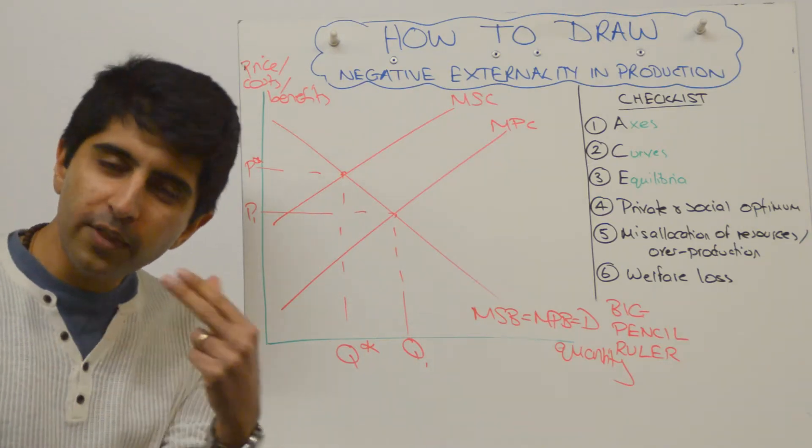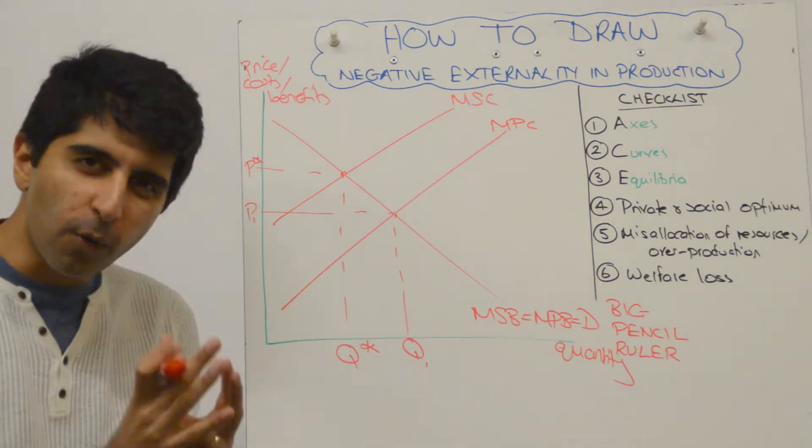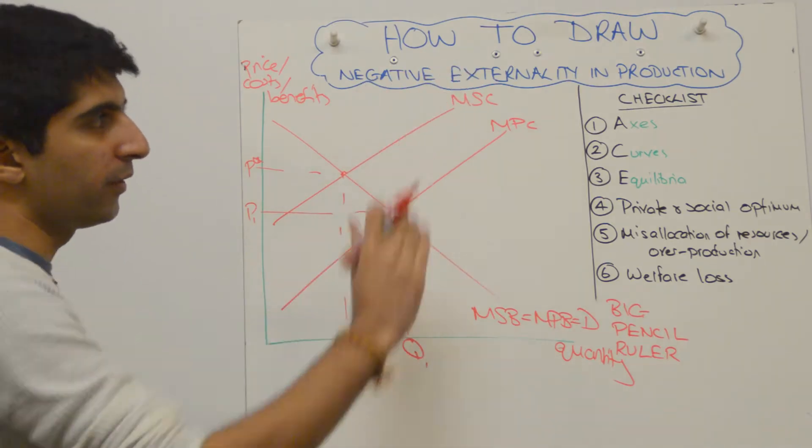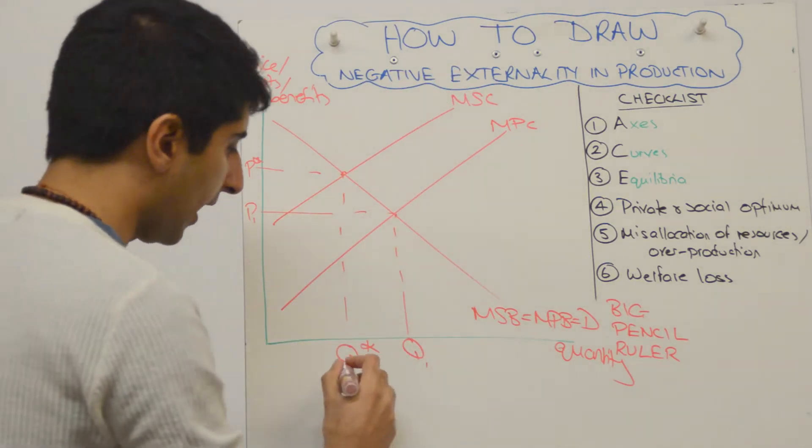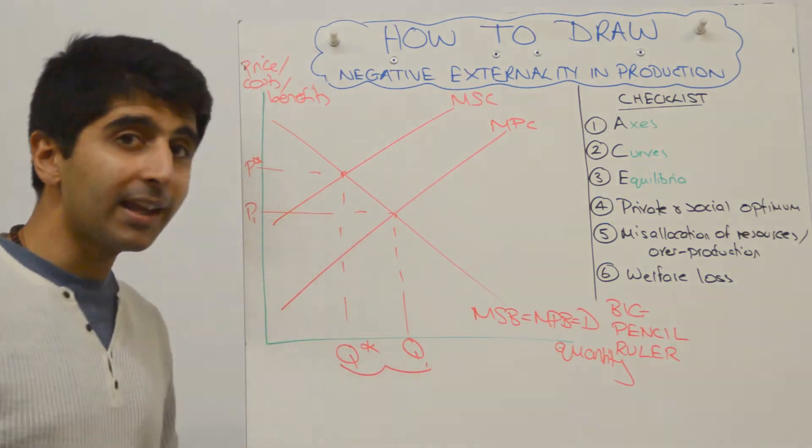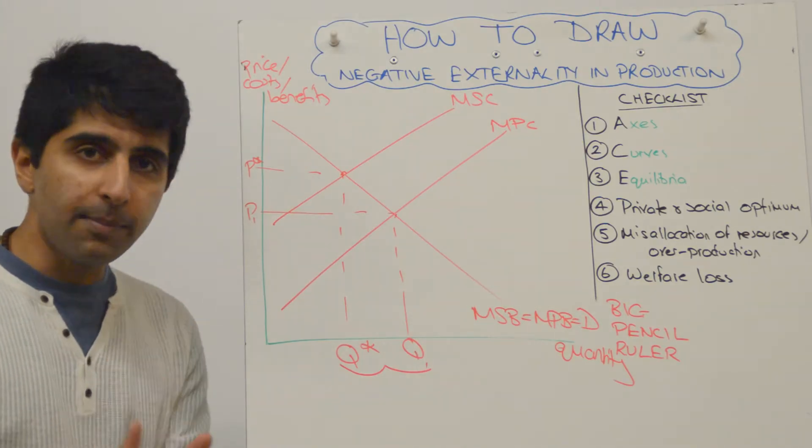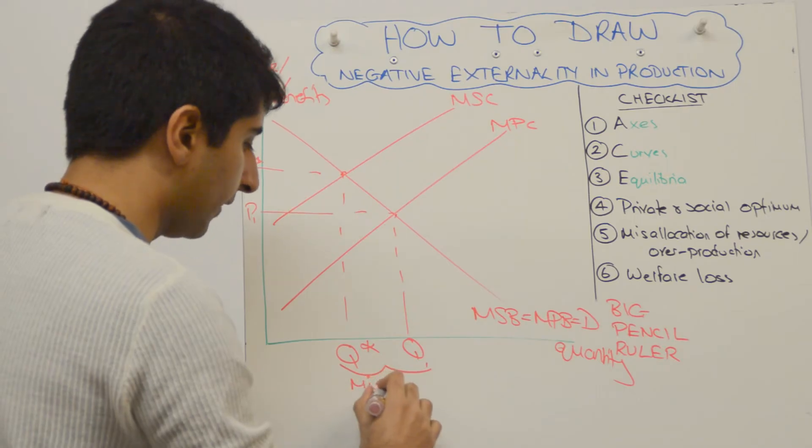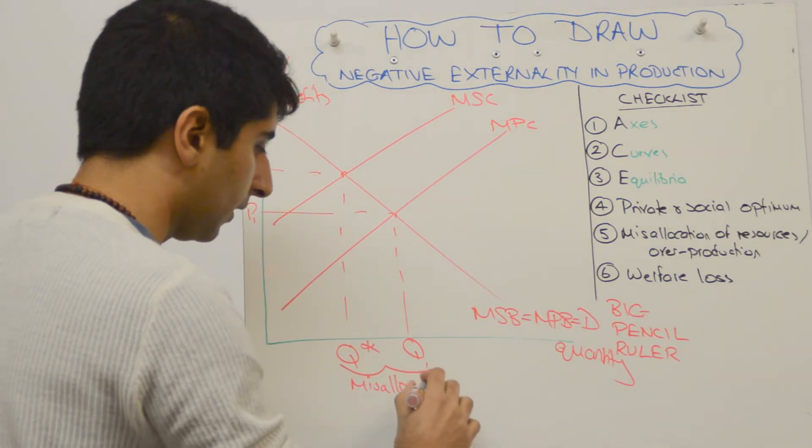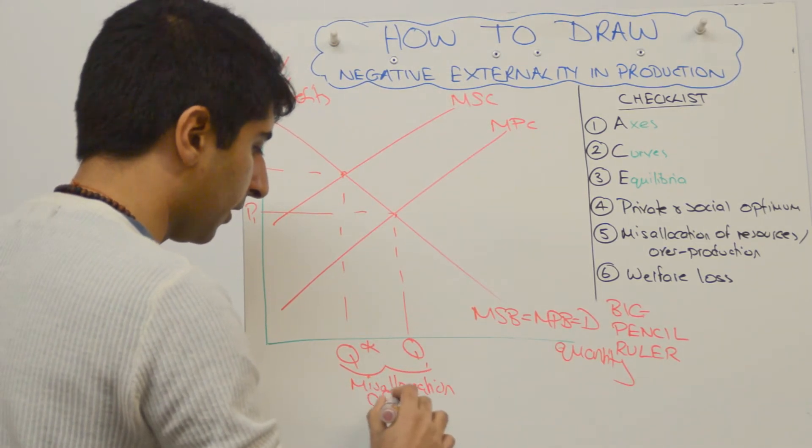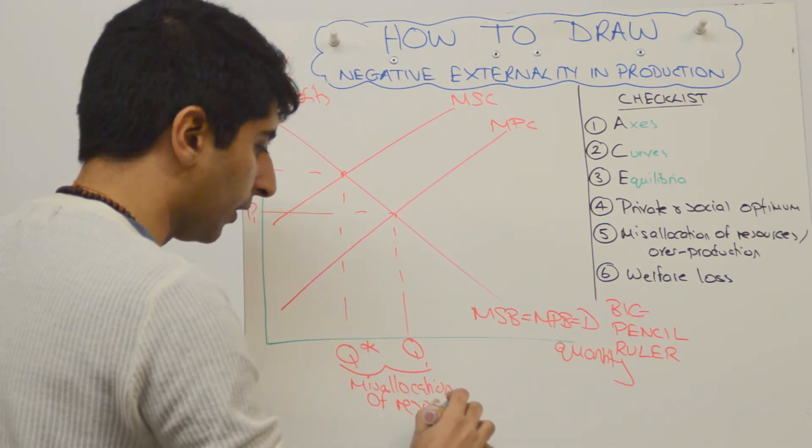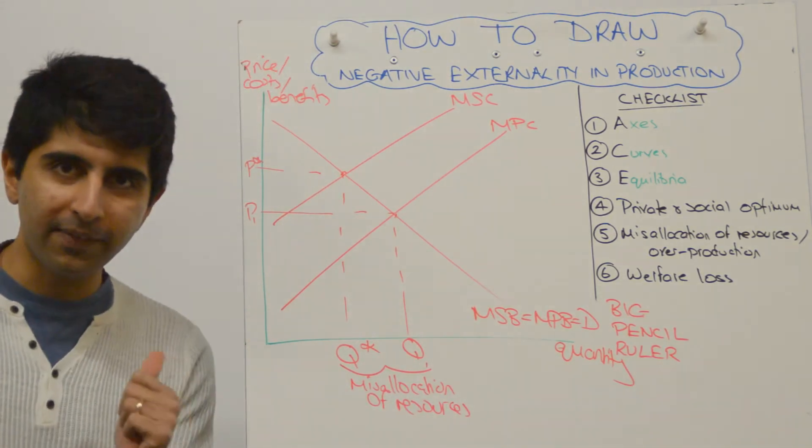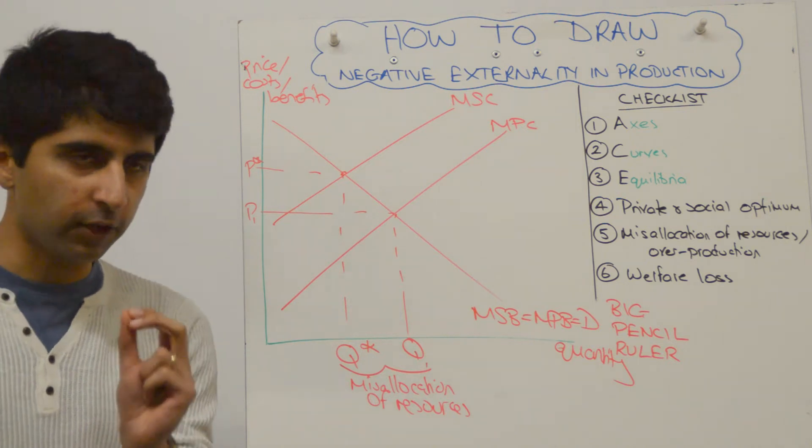Don't just stop there. Go the extra mile. Show the examiner you know exactly what the problem is when there is a negative externality in production. And that is that there is a misallocation of resources. Label it. There is an overproduction here, isn't there? So this represents the market failure. Let the examiner know that you know it. So labeling that misallocation of resources is a nice extra touch.